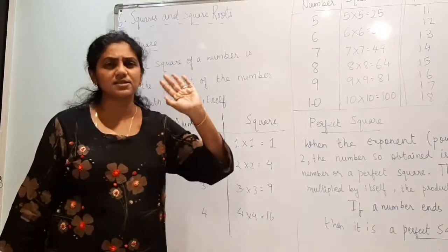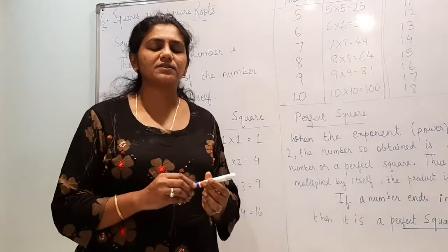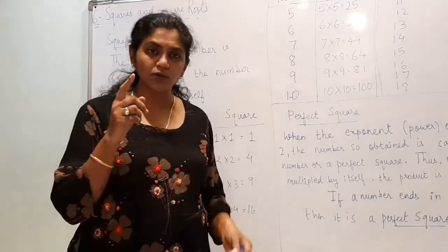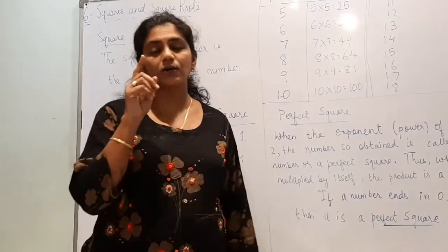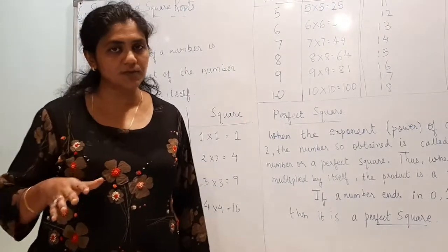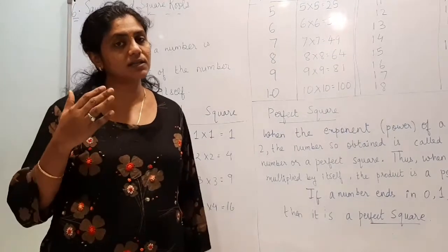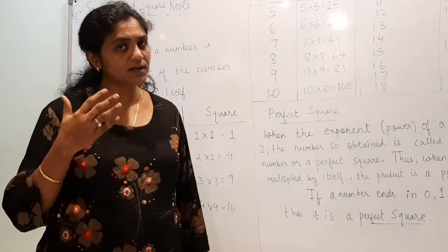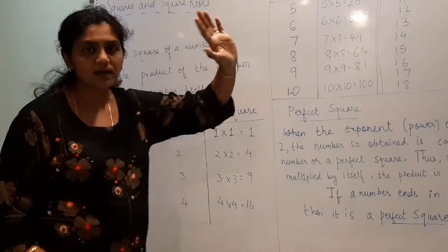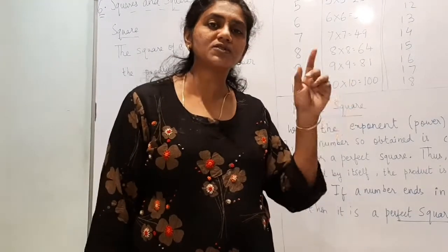You have studied a little concept of squares and square roots in class 7, related to the Pythagoras theorem, that is c² = a² + b². Now we will see in detail. First we will focus on the part of squares, its properties, and then we will proceed towards square roots.